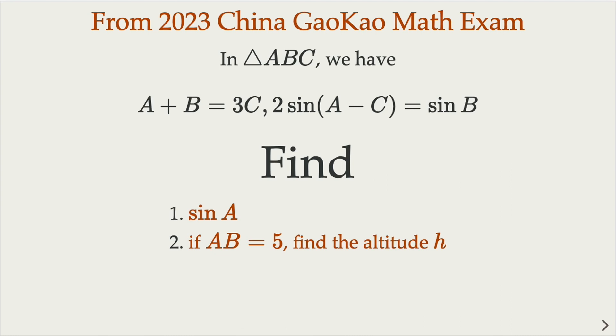Here we have triangle ABC given the angle A plus B equals 3C and 2 sine of A minus C equals sine B.